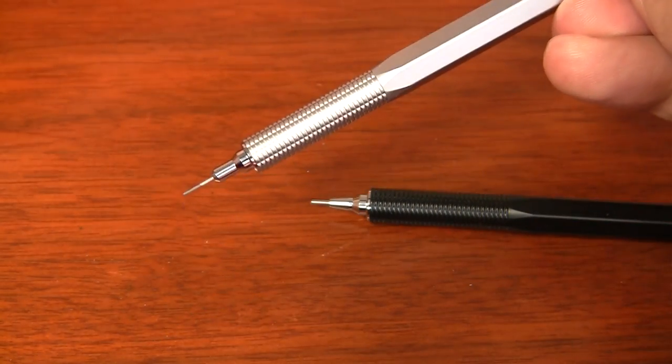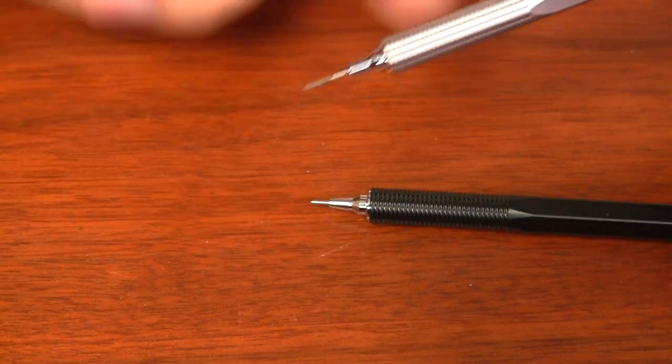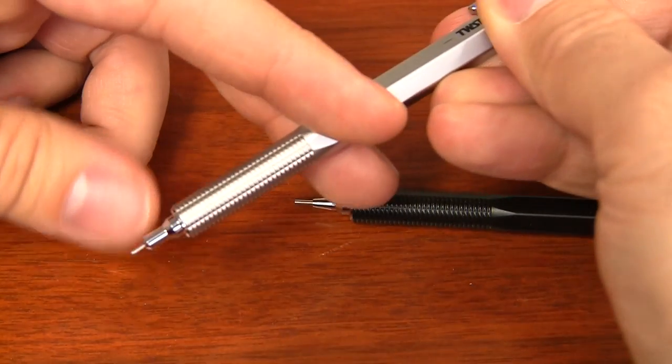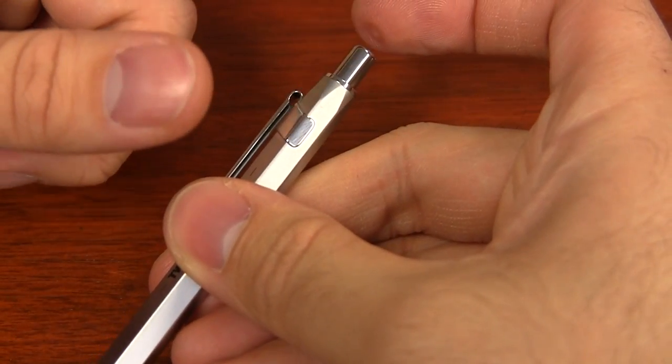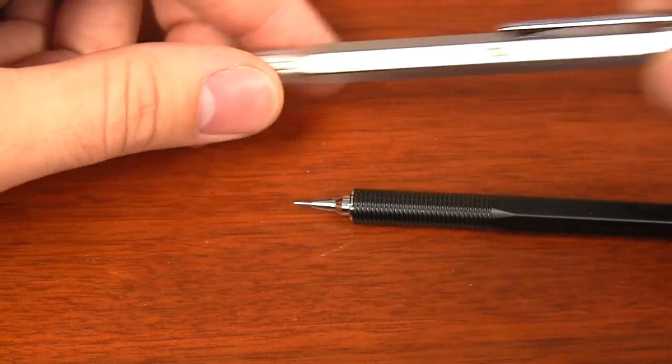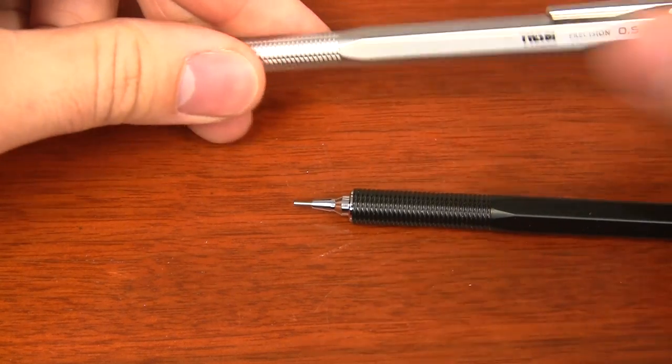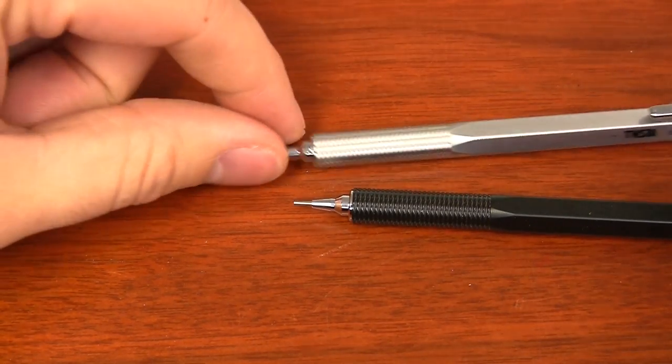Because if you think about it, every time you're clicking it, if it was moving back and forth, that would be kind of annoying. So you have to physically push the tip as you're letting go of the cap part or the eraser end in order to retract it completely.